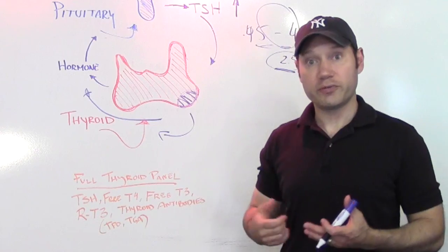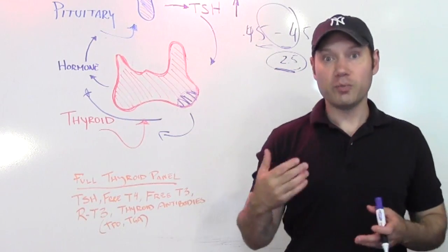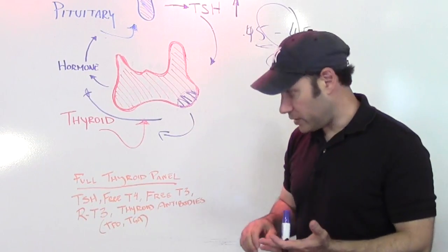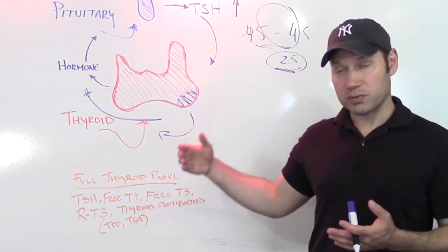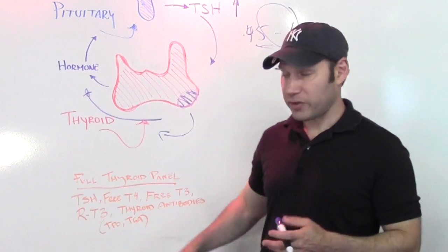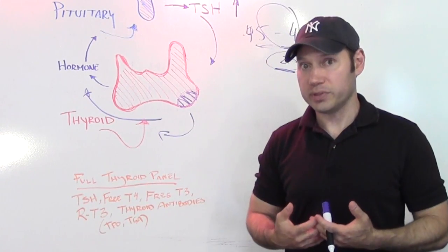So what's the solution? If you're convinced you have thyroid symptoms and your doctor runs TSH, you might want to recommend or request a full thyroid panel. Full thyroid panel is not just TSH, but free T4, free T3, reverse T3, and thyroid antibodies. The thyroid antibodies are TPO and TGA. That's going to give you a much more complete picture.